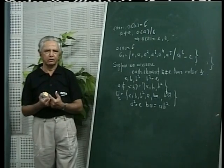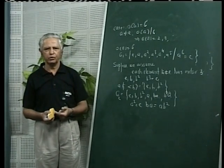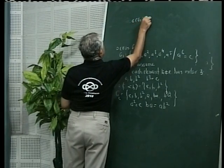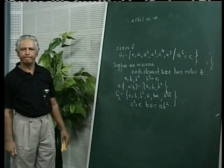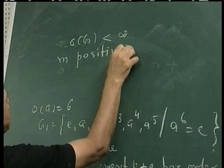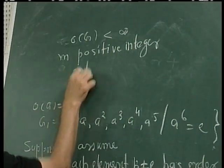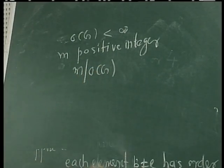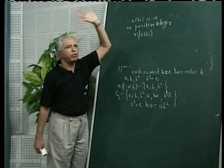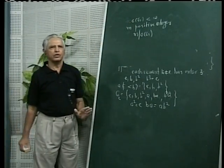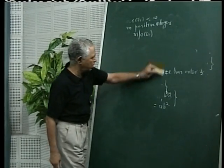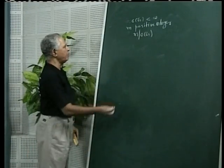We have proved Lagrange's theorem, and immediately one question comes to mind: is the converse of Lagrange's theorem true? In other words, suppose G is a finite group — order of G is a finite integer — and suppose m is a positive integer such that m divides the order of G. The converse part asks: can G have a subgroup of order m? The answer to this question is no, in general. To show this, we take the permutation group S4 with S equals {1, 2, 3, 4} and its subgroup A4.